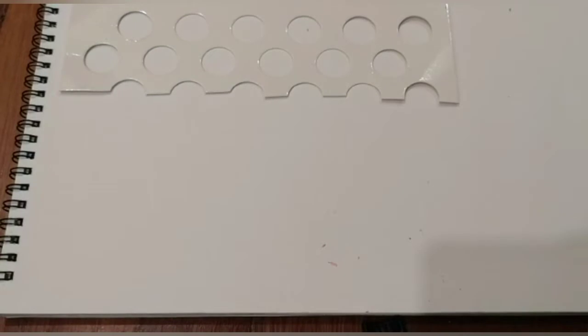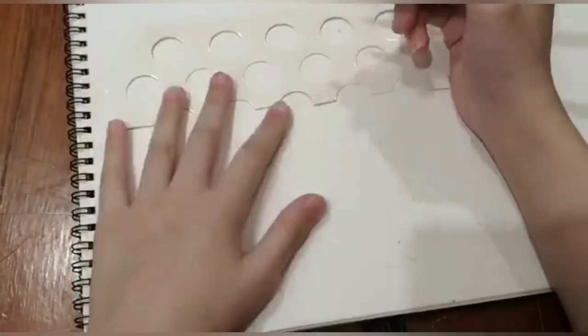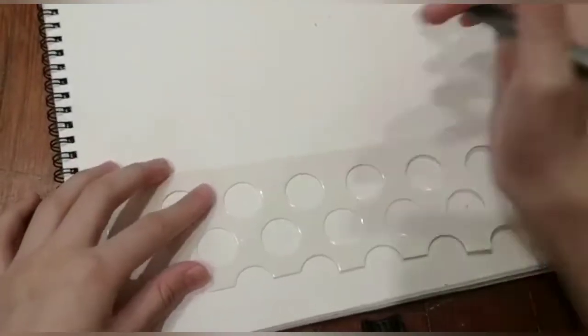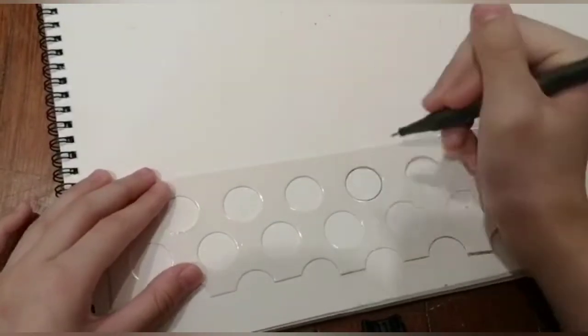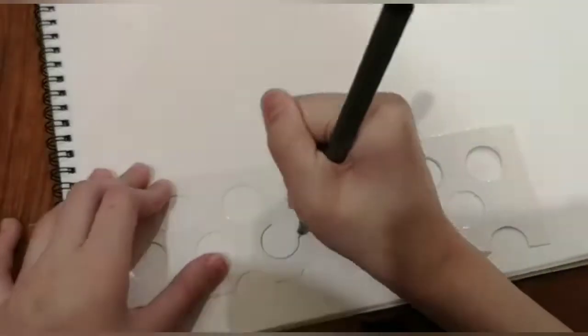First, you need a round circle stencil. If you don't have a stencil, it's fine. You can also use some tape, but the circle will be bigger. So you should find a perfect size of stencil for you to trace out the circle.